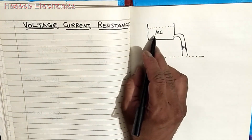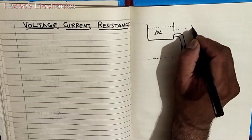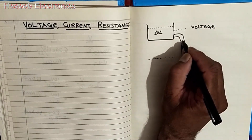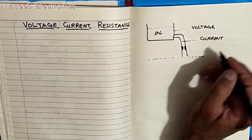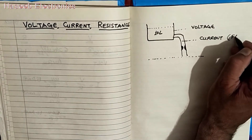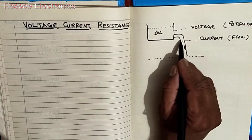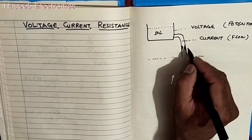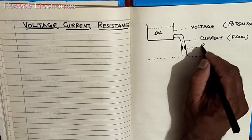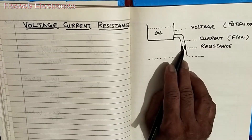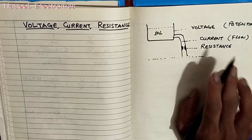This potential — the storage — can be known as voltage, and this flow is called current. So current is a flow and voltage is a potential. In the path of this flow, how much obstruction is there — this is called resistance. The obstruction in flow is called resistance.